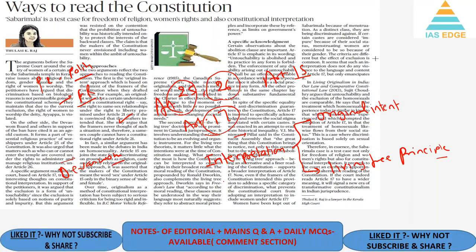The author argues for two approaches to constitutional interpretation. The first is based on original intent — the original intent of the framers. For example, the right to same-sex relationships was not originally included under Article 21, and under Article 15, the originalist approach asserted that 'sex' referred only to male and female, excluding transgender persons and homosexuals. This approach is criticized for being too rigid and inflexible.